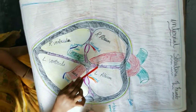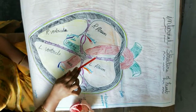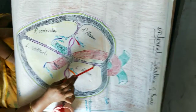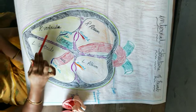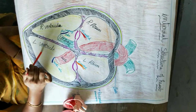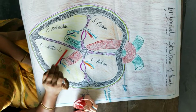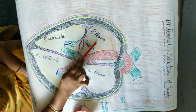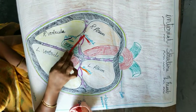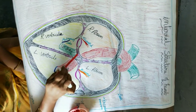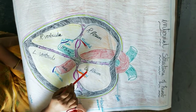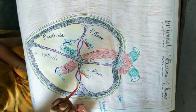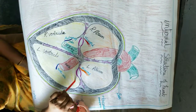The muscular walls are called grooves or septums. The septum between the right atrium and left atrium is called the intra-atrial septum. The septum between the right ventricle and left ventricle is called the intraventricular septum. The septum between the right atrium and right ventricle is called the right auriculoventricular septum. The septum between the left atrium and left ventricle is called the left auriculoventricular septum. Like this, there are four septums present in the heart.